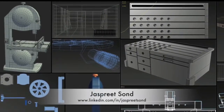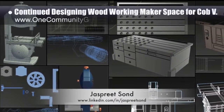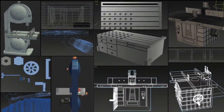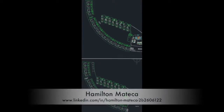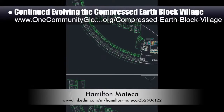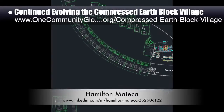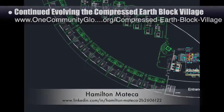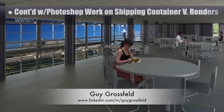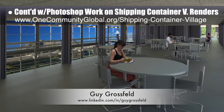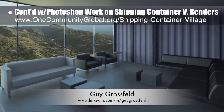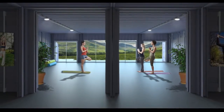Jaspreet Sand, graphic designer and computer engineer, continued with his third week of designing the woodworking makerspace for the northwest wing of Cobb Village pod 3 — what you see here are machines created as part of this layout. Hamilton Matika, AutoCAD draftsperson and designer, continued evolving compressed earthblock village pod 4, showing the redesign of the laundry area, addition of a second floor group meeting space, and moving all south bathrooms to share a plumbing wall. Guy Grossfeld, graphic designer, continued his ninth week of Photoshop work on the shipping container village pod 5 renders, focusing on the initial versions of the third floor dining area, informal conference room, and the final version of the yoga and meditation room.